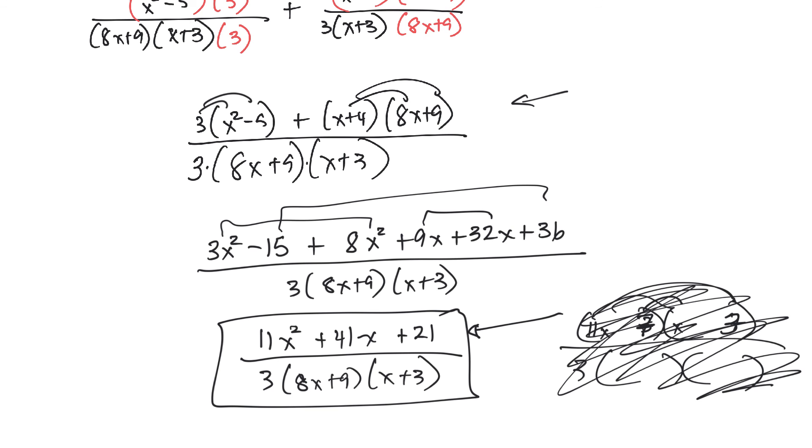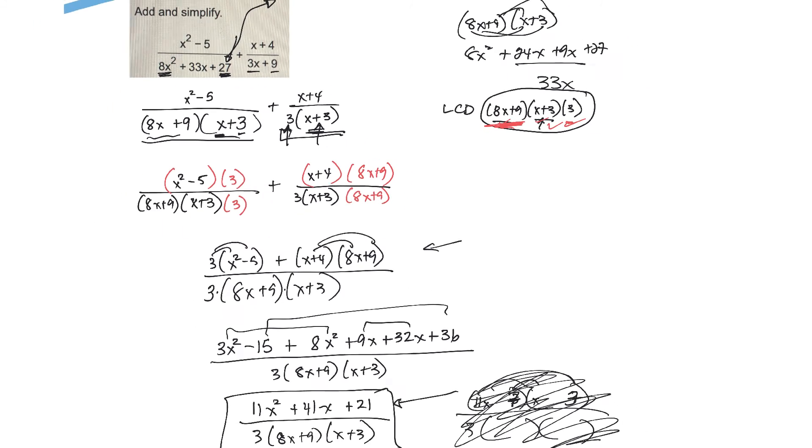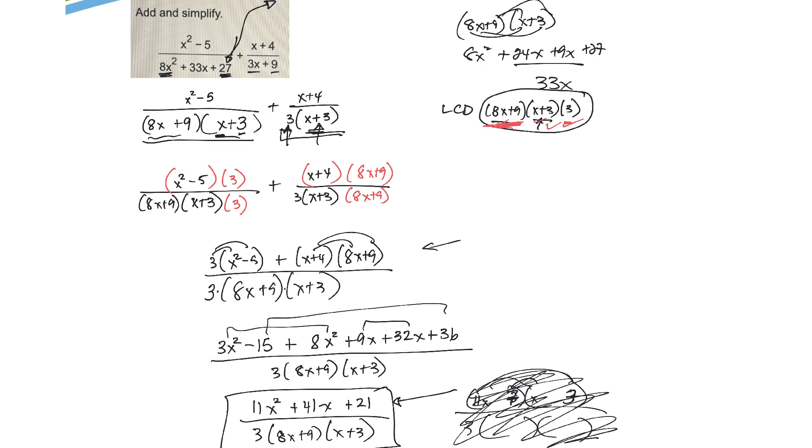All right, tough question. Tough question. Being able to identify that you need to get a common denominator between these two and then to be able to factor that and factor that and then identify what the lowest common denominator is,